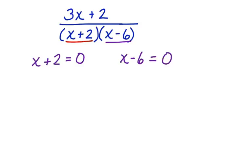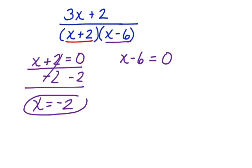So, on this equation, we're going to subtract 2 from both sides. These cancel. x is equal to negative 2. That's my first excluded value.